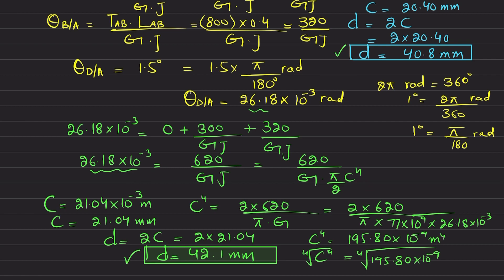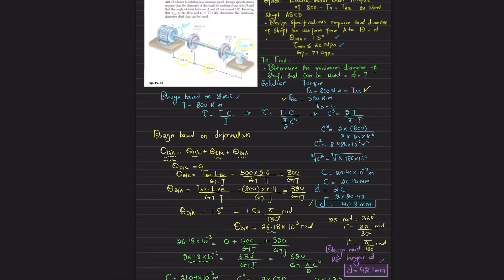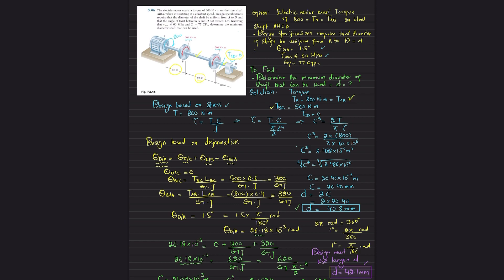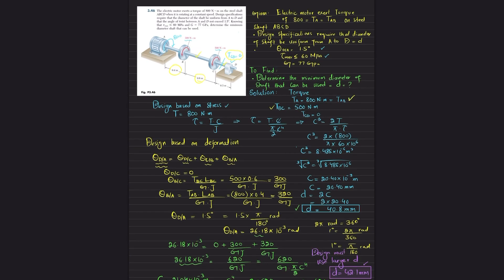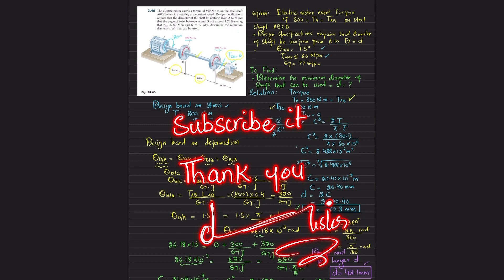We have two candidate diameters: 40.8 mm based on shear stress, and 42.1 mm based on angle of twist. For design purposes, we must use the larger diameter. Therefore, the minimum shaft diameter is d = 42.1 mm, which satisfies both conditions. That concludes problem 3.46. Please subscribe to the channel and feel free to ask questions in the comments.